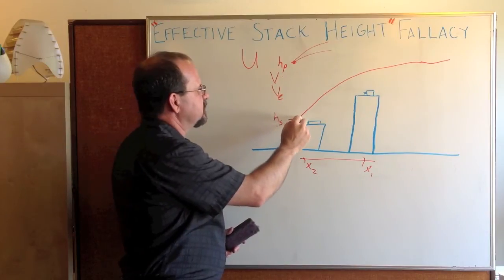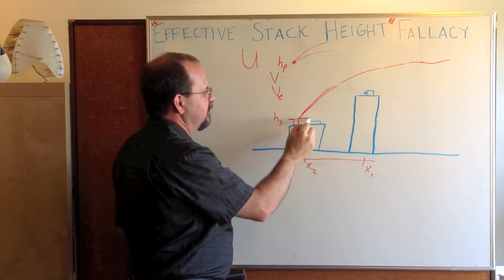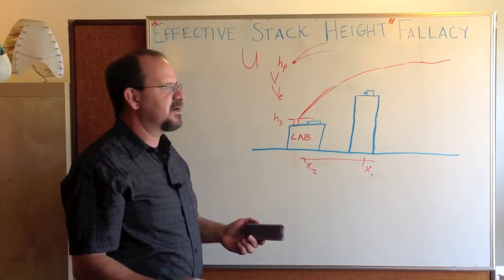For example, this is kind of a low wind speed plume rise case, but if you have high wind speed, you get very little plume rise. You could end up with a lot of re-entrainment at a nearby air intake.